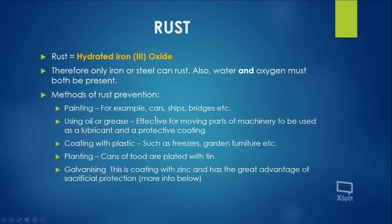Rust is hydrated iron oxide. Hydrated means water is involved, and iron oxide is the product of iron combining with oxygen. Rusting can only happen in iron or steel, since steel contains iron — everything else is technically corroding. For rusting to occur, all three things must be present: iron or steel, water, and oxygen.